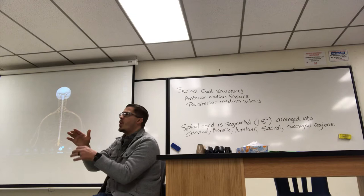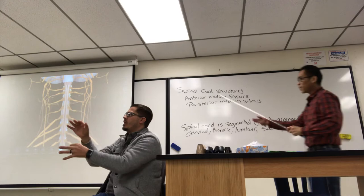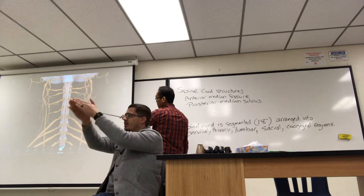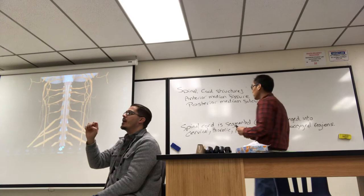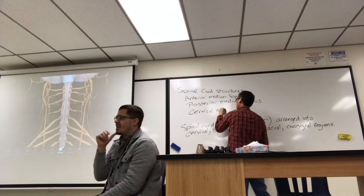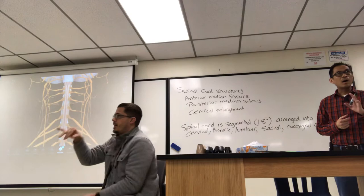Looking at the whole cord and zooming into the top of the cervical region, there is a slight expansion — an enlargement of the spinal cord in that specific region. If asked to identify it, be specific: it is called the cervical enlargement. That part of the spinal cord is a little wider because the cell bodies are larger in this region.